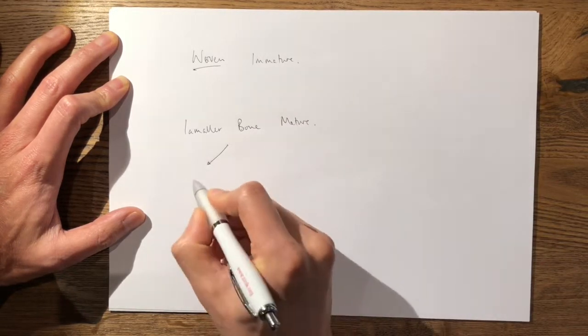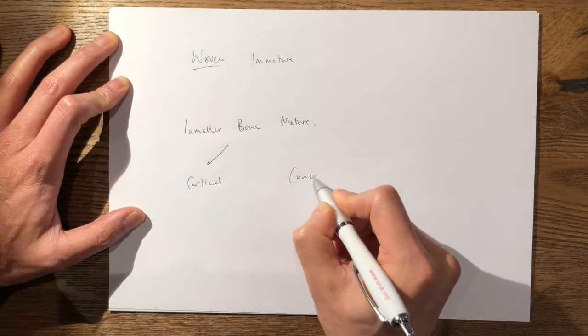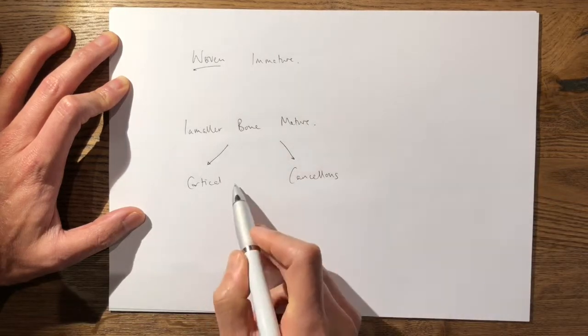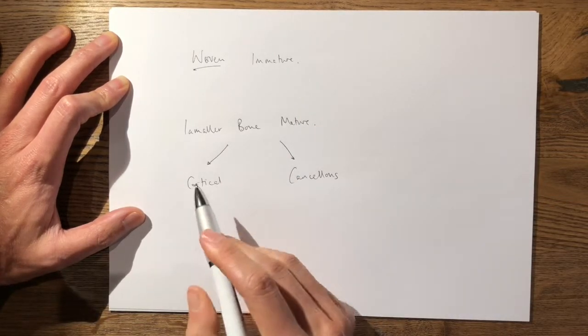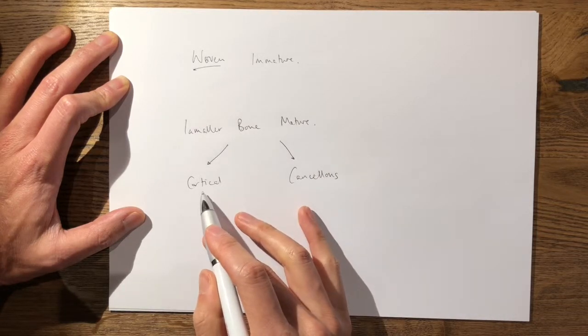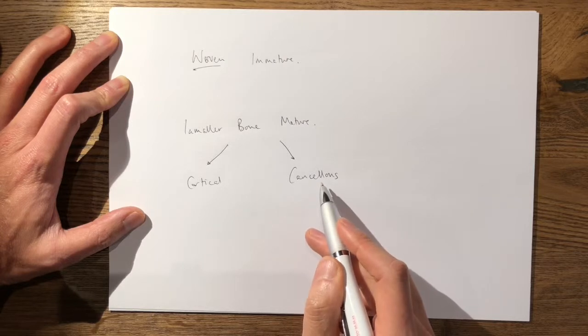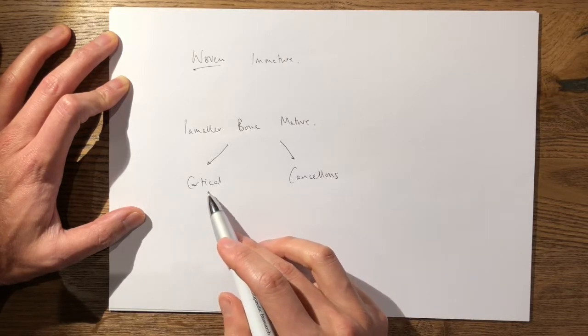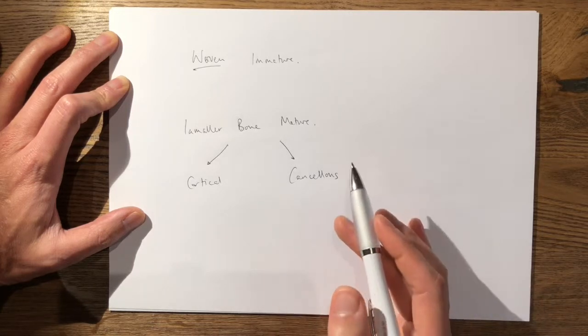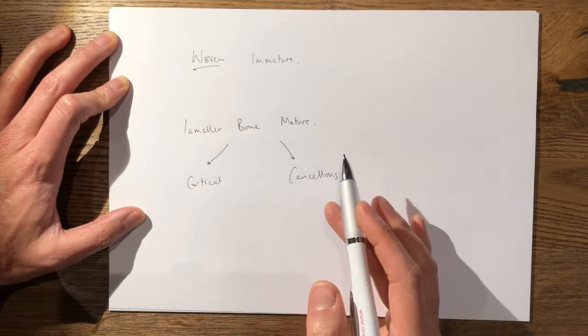Your cortical or compact bone is more dense, less porous—approximately 5 percent porosity compared to 30 to 50 percent porosity of cancellous bone. It has much more structural integrity. Cancellous or trabecular bone has a much more honeycomb appearance, is less dense, less structural integrity.